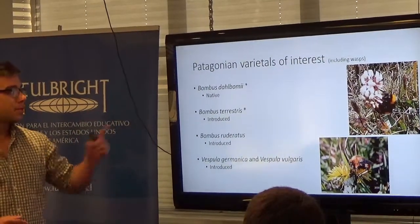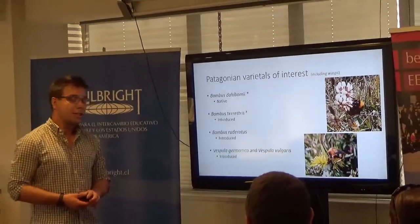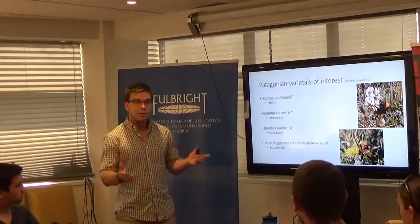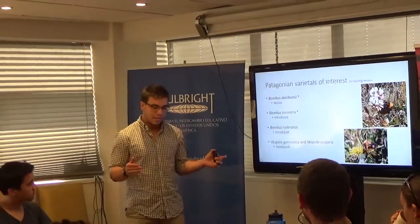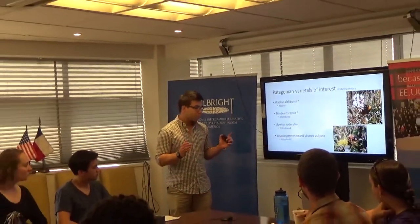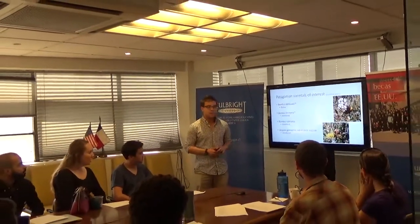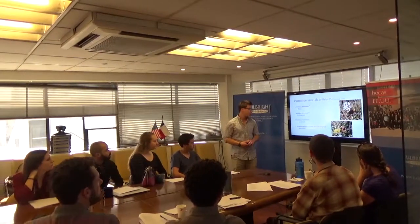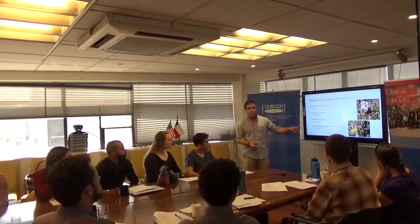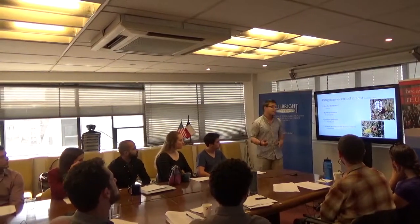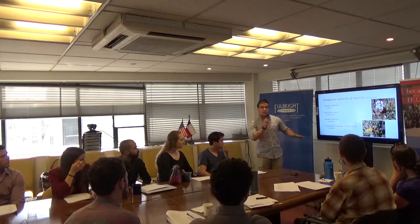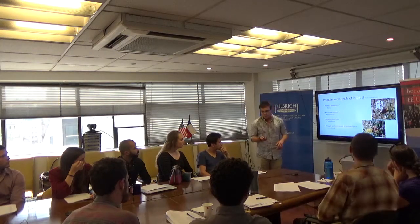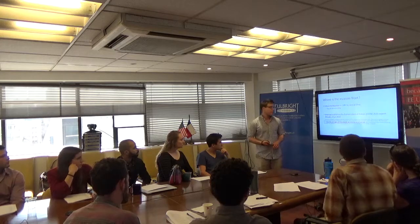When Bombus terrestris appeared in Chile and spread over into Argentina, that's when we really saw a huge reduction in the regions where Bombus dahlbomii was found, as well as population density in locations where it persisted. There are also two yellow jackets that have been introduced, and they are another factor involved in the consequences for the local community of plants.